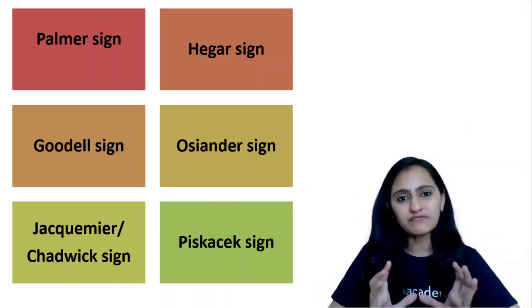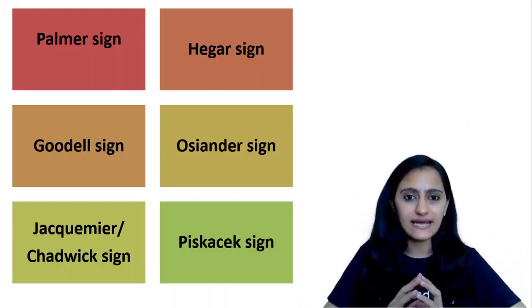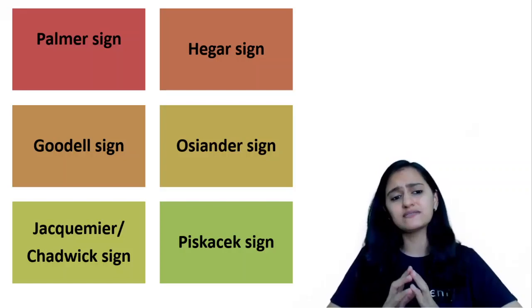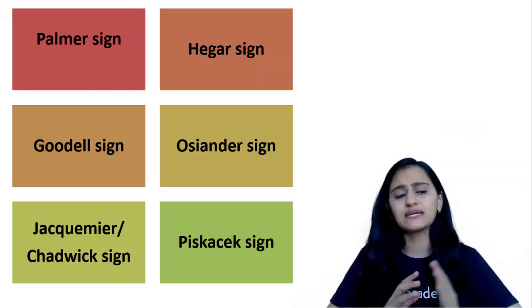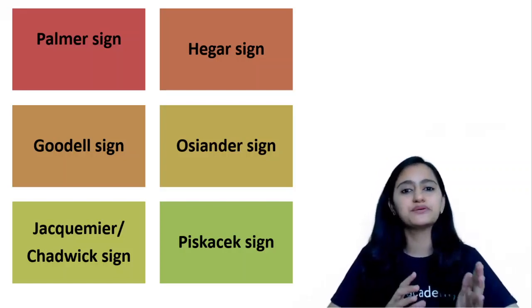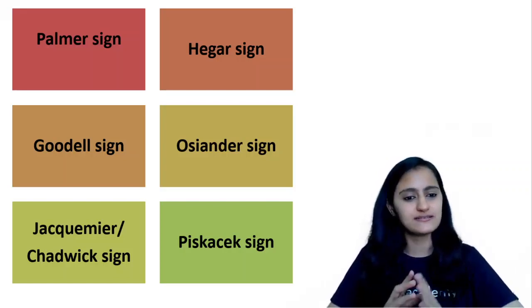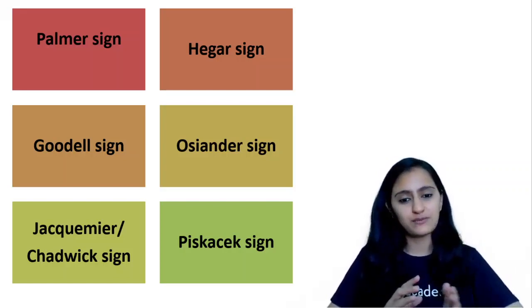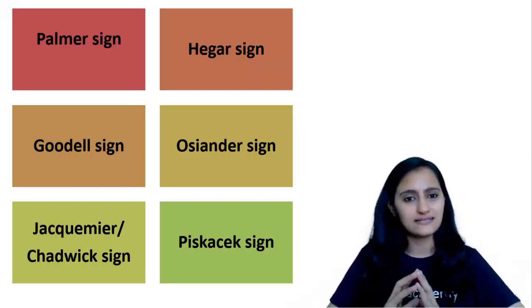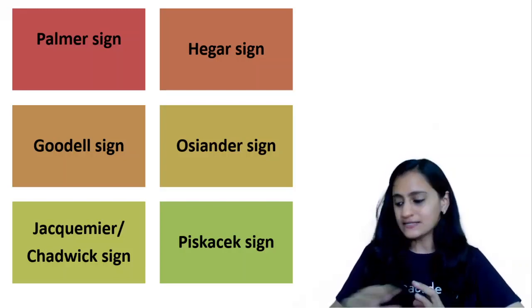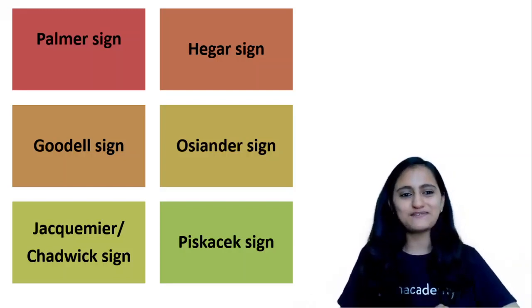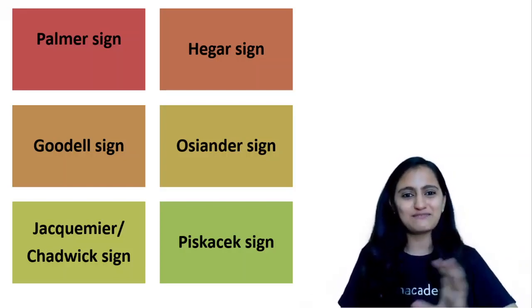The six most frequently asked signs we'll discuss are: Palmer sign, Hegar sign, Goodell sign, Ockander sign, Jacquemier or Chadwick sign, and Piskacek sign. Before we dive into the cheat codes, let me tell you briefly about myself.